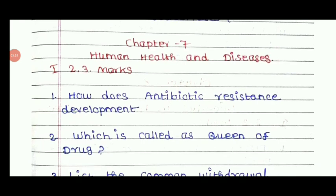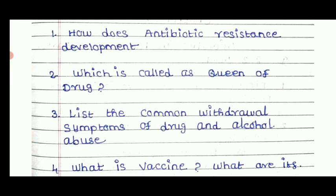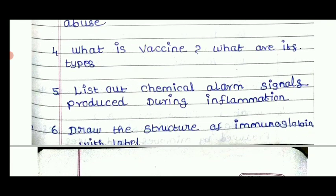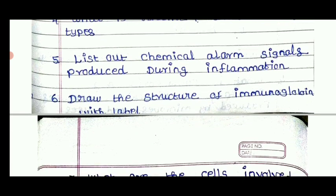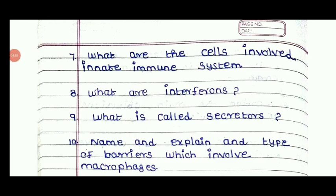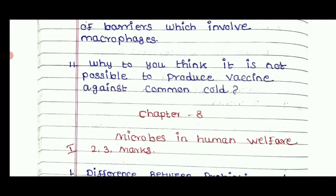For Chapter 7, Human Health and Disease, important questions include: how does antibiotic resistance develop and which is called the queen of drugs; list the common withdrawal symptoms of drug and alcohol abuse; what is a vaccine and what are the types; list out the chemical alarm signals produced during inflammation; draw the structure of immunoglobulin with a labelled diagram; what are the cells involved in the innate immune system; what are interferons; explain the types of barriers involved in macrophage activity; and why is it not possible to spread a vaccine against the common cold.